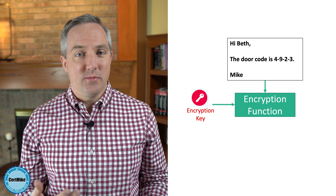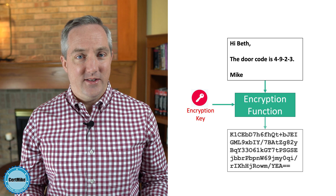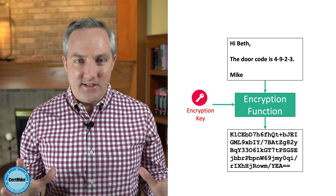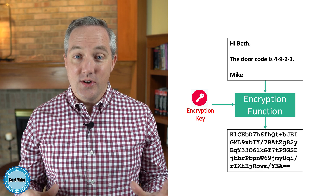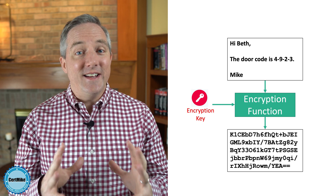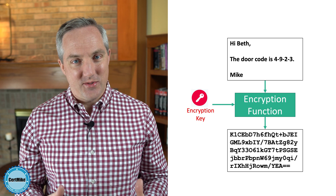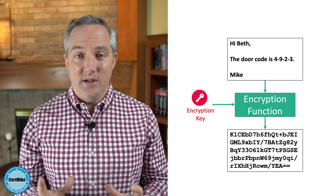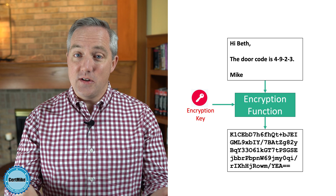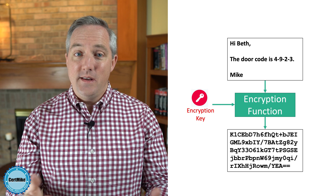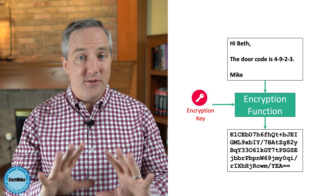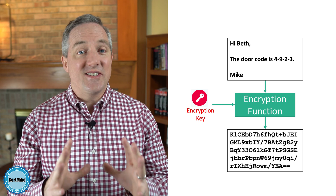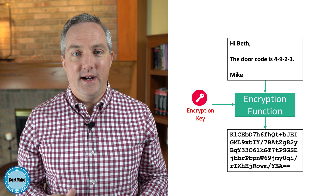Here's what that ciphertext message might look like. Now this is unintelligible — I can't make any sense of the contents of this message, and importantly, neither can anyone else who comes across it. I can then take this encrypted message and send it over the internet to Beth. If it's intercepted along the way, there's no problem. The message is encrypted, and it's safe from prying eyes.